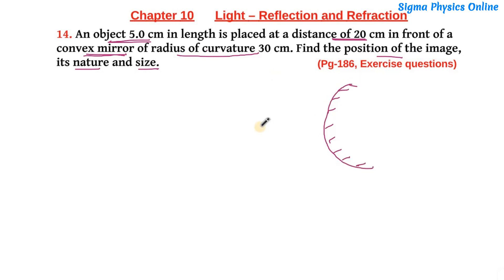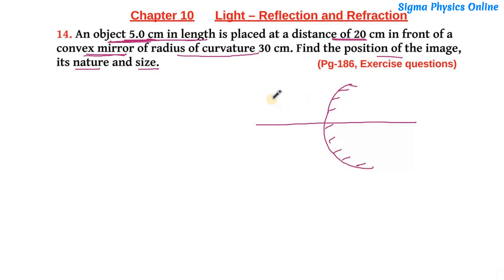Here is a convex mirror and this is the principal axis of the convex mirror. We have an object of length 5 cm — length means it is the height of the object. The object is placed at a distance of 20 cm in front of this mirror, and its height is 5 cm, placed at a distance of 20 cm from the pole of this mirror.